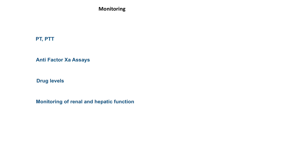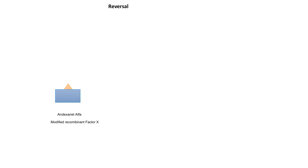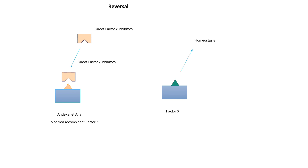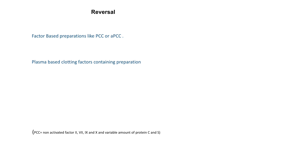We also need to regularly monitor renal and hepatic functions when using these drugs. If reversal of anticoagulant effects is required, we have a specific antidote called andexanet alfa — a recombinant synthetic molecule that resembles natural factor 10 but does not have its functions. Andexanet alfa in the blood will bind to these drugs, freeing up natural factor 10 for hemostasis. When andexanet alfa is not available, factor-based preparations such as prothrombin complex concentrates can be used, and when PCC is also unavailable, plasma-based clotting factor preparations can be used to reverse the actions of these drugs.